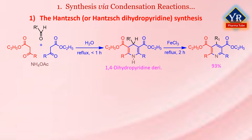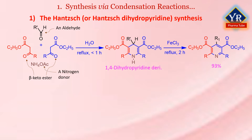The first method of synthesis is the Hansch synthesis. The Hansch pyridine synthesis, or Hansch dihydropyridine synthesis, is a multi-component — that is, four-component — organic reaction between an aldehyde such as formaldehyde, two equivalents of a beta-keto ester such as ethyl acetoacetate, and a nitrogen donor such as ammonium acetate or ammonia. The initial reaction product is a dihydropyridine which can be oxidized in a subsequent step to a pyridine. The driving force for this second reaction step is aromatization. This reaction was reported in 1981 by Arthur Rudolf Hansch, and therefore the reaction is named after the scientist as Hansch pyridine synthesis.